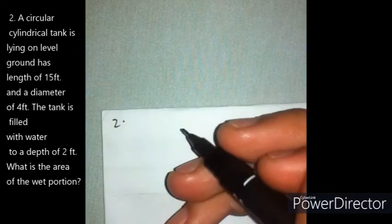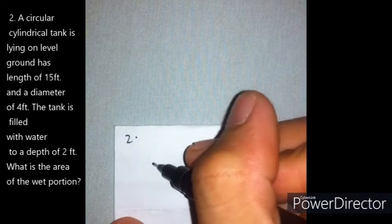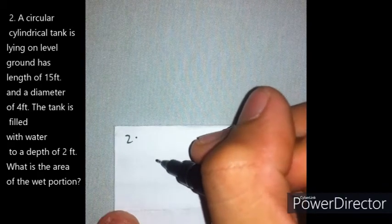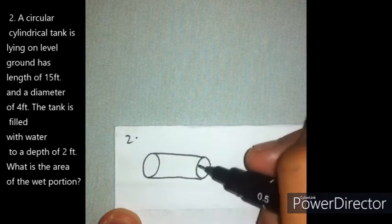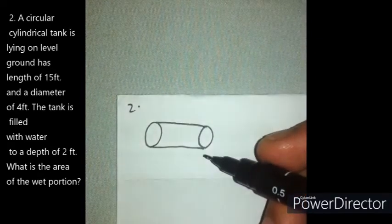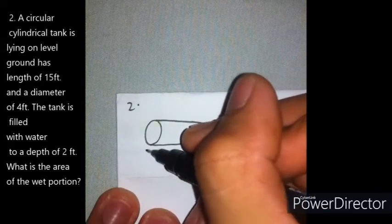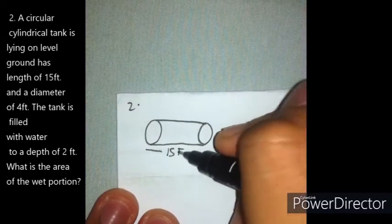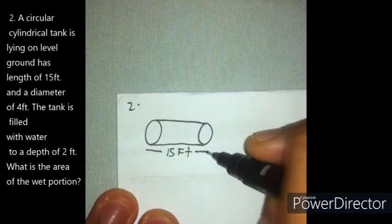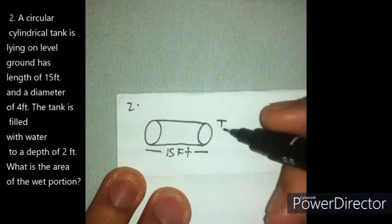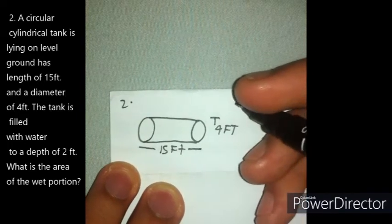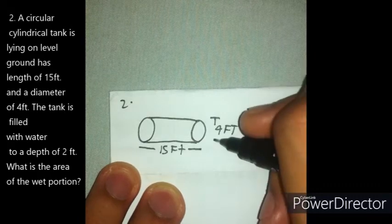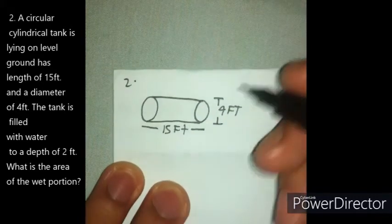First, we are going to draw a cylindrical tank. The cylindrical tank lying on the ground has a length of 15 feet and a diameter of 4 feet.